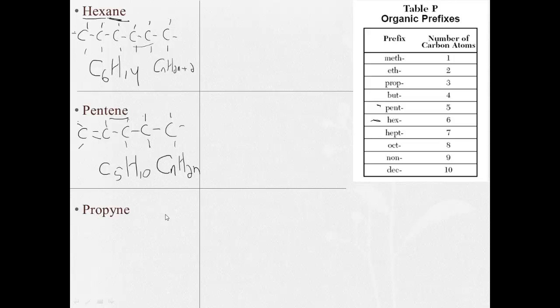Propyne. Propyne means there's three carbons, one, two, three, and the yne means there's at least one triple bond. Each carbon can have four bonds, so this one has three, so it gets one hydrogen. This carbon is full, it has all four bonds. This has only one more to go, so we have a total of four hydrogens, so C3H4.